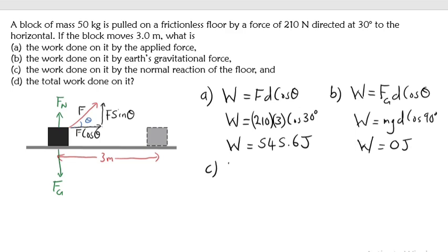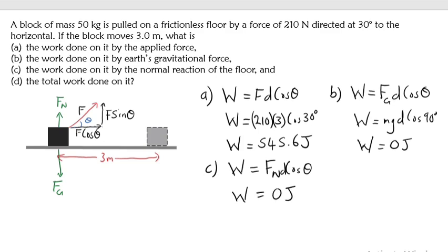Part C: work done by the normal force. Using W = F_normal × d × cos theta — the angle between the normal force and the displacement is also 90 degrees, so the work done by the normal force is also zero joules.